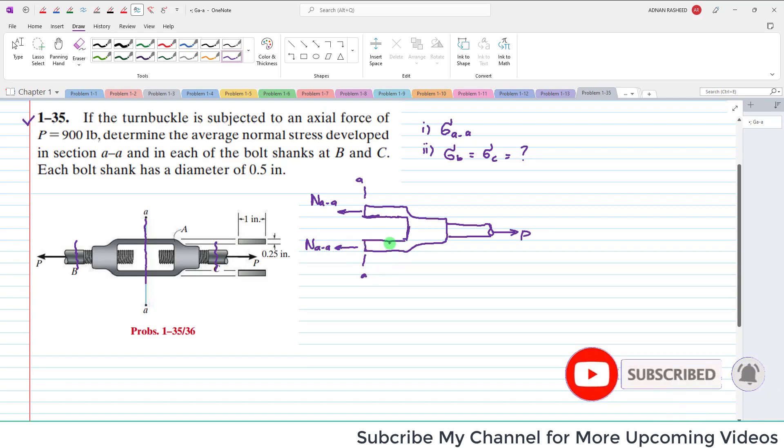You will find N_AA. P is given, that is equal to 900 pounds. So first you will find this normal force along section A-A. For that we will apply the equilibrium condition that sum of all forces along x direction is equal to zero, and taking the force in this direction as positive.